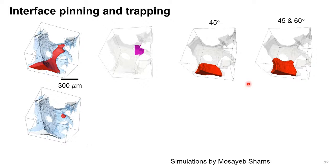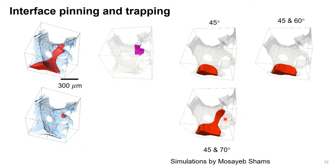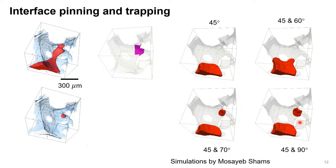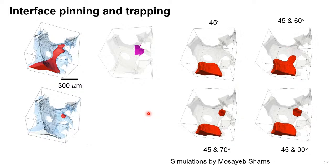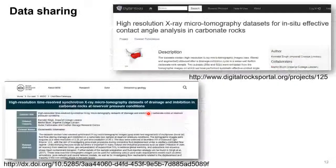We increased the contact angle further and could see trapping again occurring. This was very nice — we could resolve the problem of why we have snap-off and why we see interfaces pinning there. I'd like to mention that all the dynamic imaging datasets shown are available online on the BGS server, and some datasets are also available on the Marsha server from the Digital Core portal.